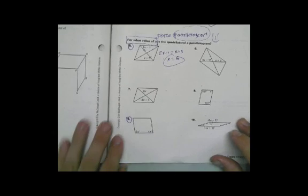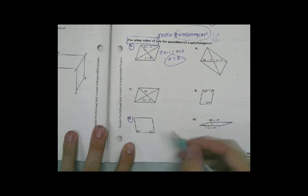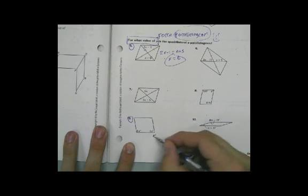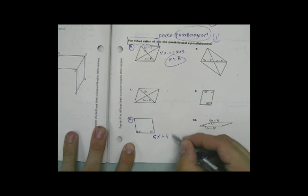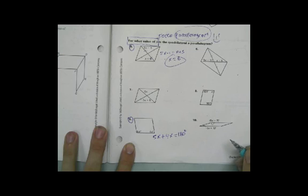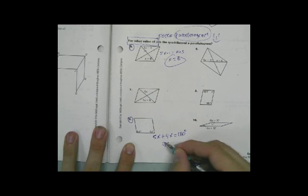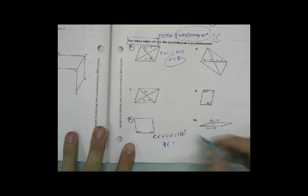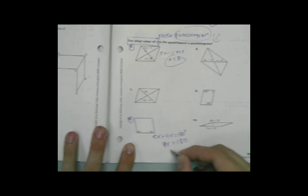For this one down here, number 9, if this is going to be a parallelogram then these have to be supplementary and 5x plus 4x has got to equal 180 degrees. So this is going to be 9x equals 180 and x equals 10.